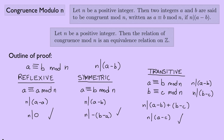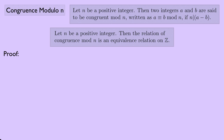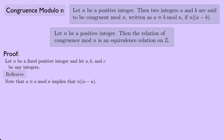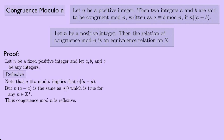Now let's do a formal proof. Let n be a fixed positive integer and let a, b, and c be any integers. First, I'll show congruence mod n is reflexive. Note that a ≡ a (mod n) requires n divides a minus a. Since n divides 0, which is true for any positive integer n, congruence mod n is reflexive.